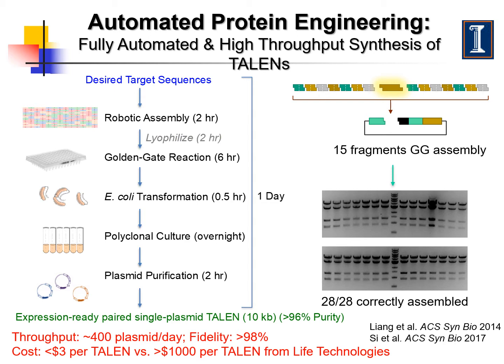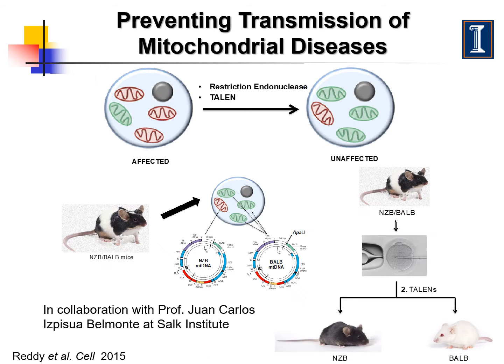In the past few years, we developed a fully automated workflow for design and construction of TALENs, which is a powerful tool for genome editing. This workflow can be completed within 24 hours, with a throughput of nearly 400 TALENs, which significantly reduced the cost for TALEN synthesis. As a demonstration, we designed and engineered TALENs with increased sequence specificity toward a gene involved in mitochondrial disease, which were used to cure that disease in a mouse model by our collaborator from the Salk Institute.